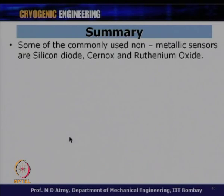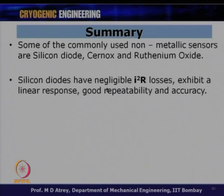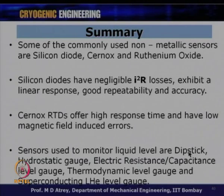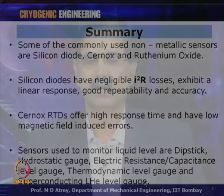In summary: commonly used non-metallic sensors are silicon diode, Cernox, and ruthenium oxide. Silicon diodes have negligible I²R losses, exhibit linear response, good repeatability and accuracy. Cernox RTDs offer high response time and low magnetic-field-induced errors — preferred in magnetic field environments. Liquid level sensors include deep stick, hydrostatic gauges, electrical resistance or capacitance liquid level gauges, thermodynamic level gauge, and superconducting liquid helium level gauge. Deep stick gives approximate nitrogen level; superconducting gauge is used specifically for liquid helium.